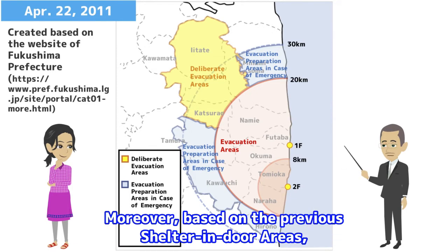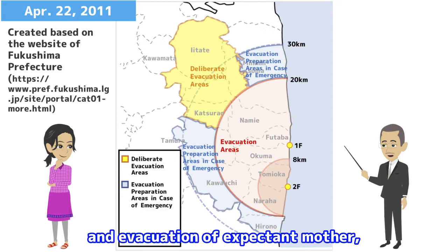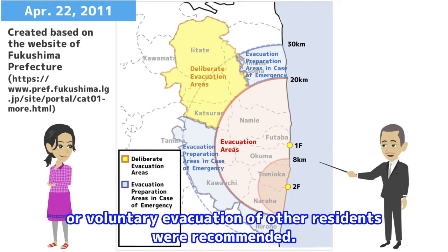Moreover, based on the previous shelter-in-door areas, the evacuation preparation areas in case of emergency were designated, and evacuation of expectant mothers or voluntary evacuation of other residents were recommended.